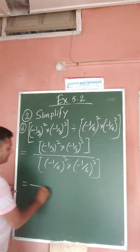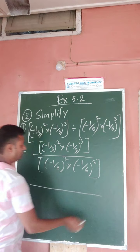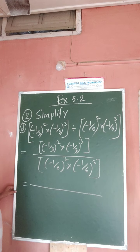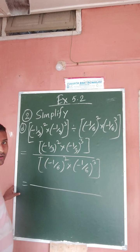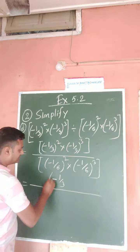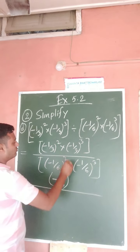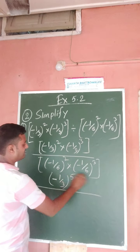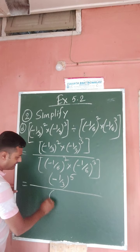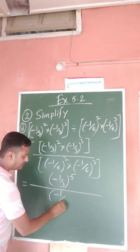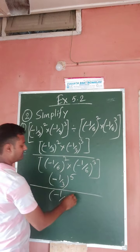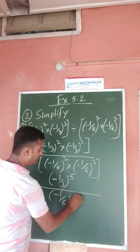Now we apply the exponent formula for the first part: a to the power m into a to the power n equals a to the power m plus n. So 2 plus 3 becomes 5. And this one again, a to the power m plus n, that means 2 plus 3 equals 5.